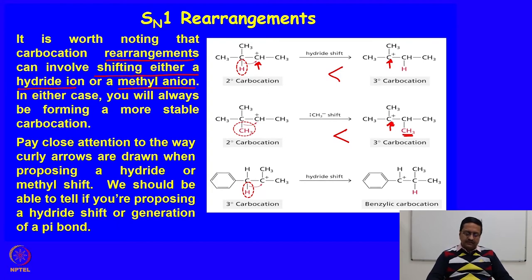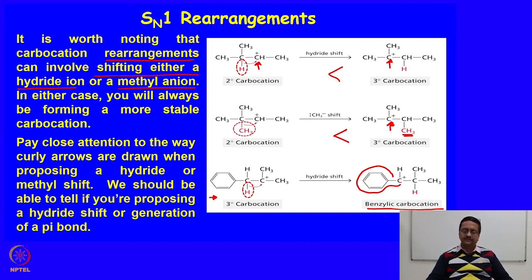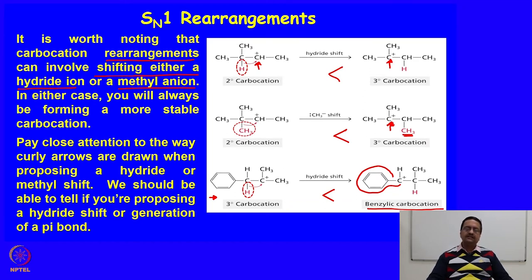In this third example, the hydride is shifting from the benzylic position to the carbocation site, making a new benzylic carbocation which can get delocalized over the aromatic ring and hence has better stability. This benzylic carbocation has higher stability than the tertiary carbocation from which it was generated. Depending on the nature of the carbocation and the groups on the adjacent carbon, it is always possible to form a new, more stable carbocation than the one formed in the first step of the reaction.